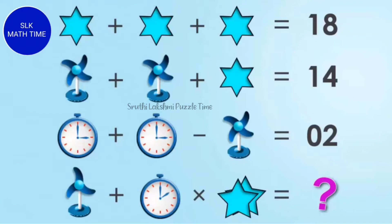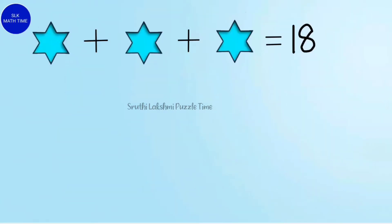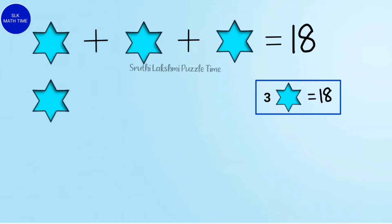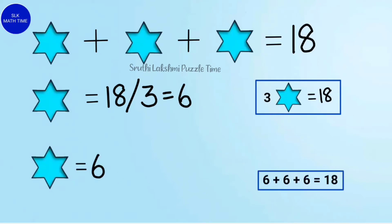Time's up. Let's see the first equation. To find the value of 1 star, let's do 18 divided by 3, because there are 3 stars. And 18 divided by 3 is 6. So the value of 1 star is 6. To check our answer, let's add them. So 6 plus 6 plus 6 is 18.